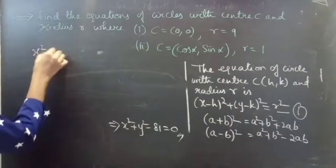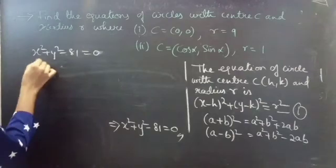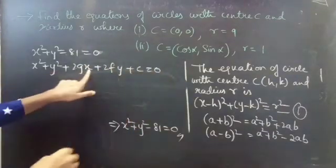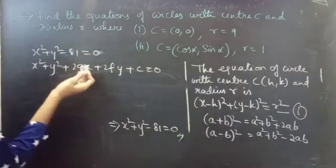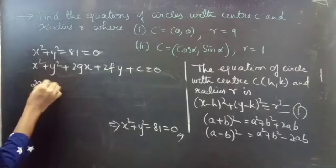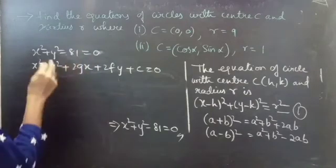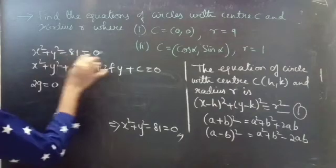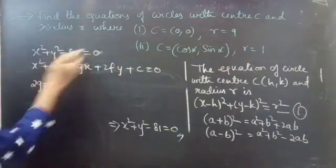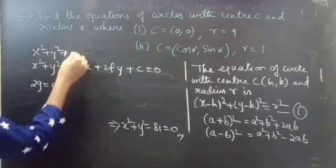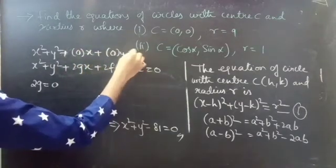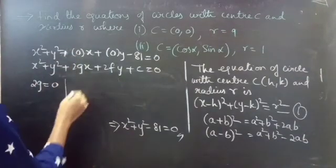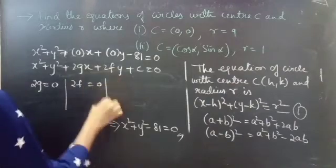Let's verify the answer. Compare the equation X² + Y² − 81 = 0 with the general circle equation X² + Y² + 2GX + 2FY + C = 0. By equating coefficients of X and Y and the constant terms, we can write it as X² + Y² + 0·X + 0·Y − 81 = 0. So 2G = 0, 2F = 0, and C = −81.